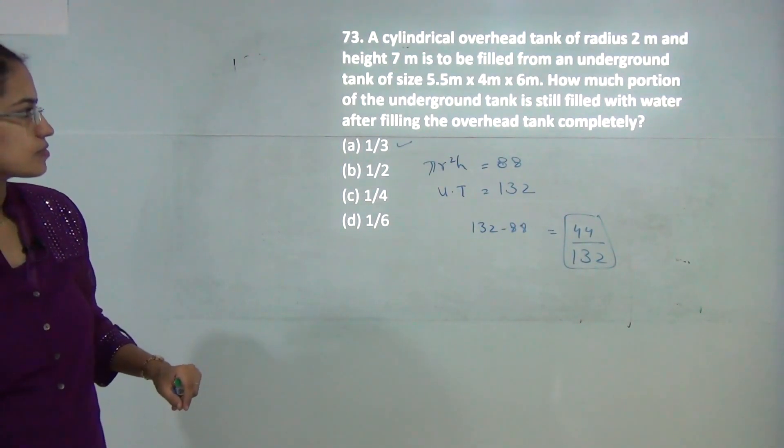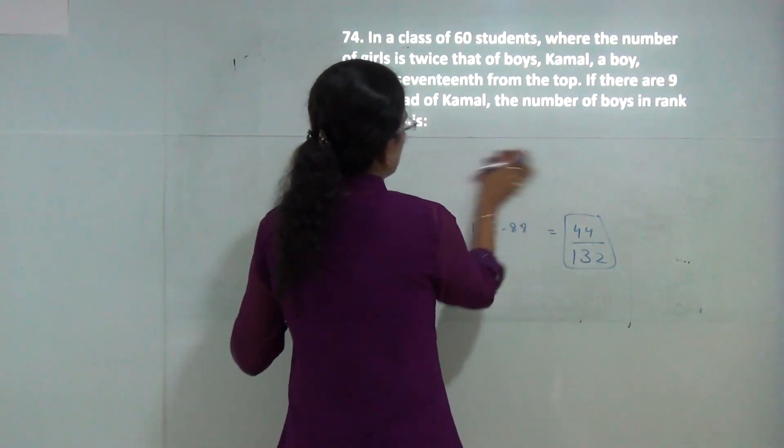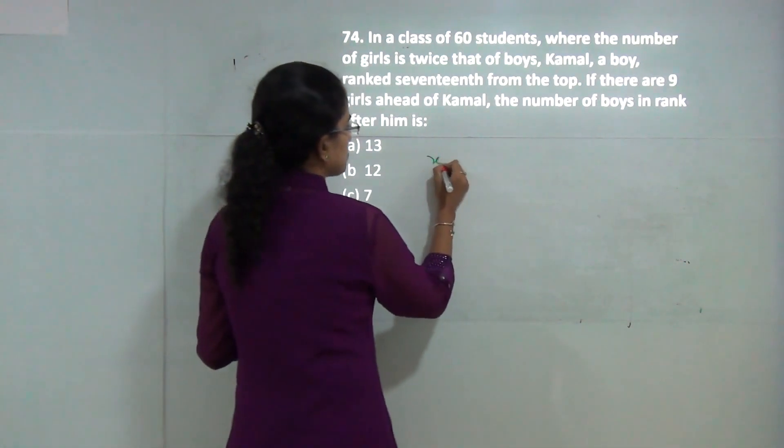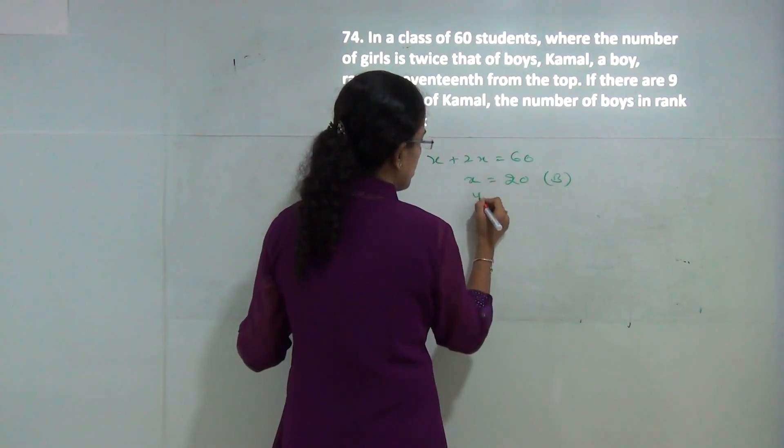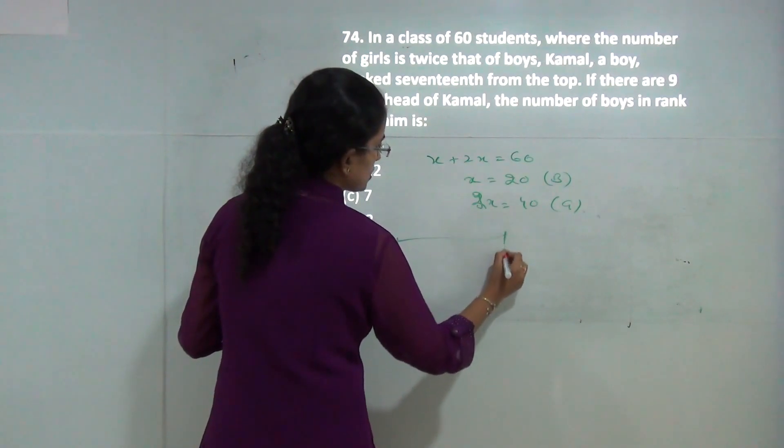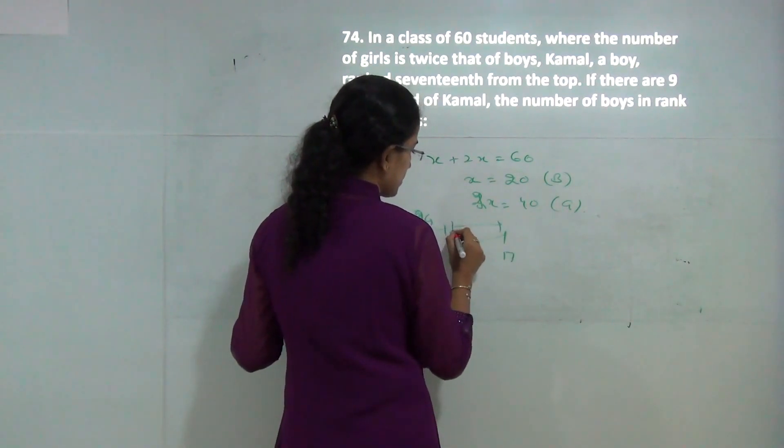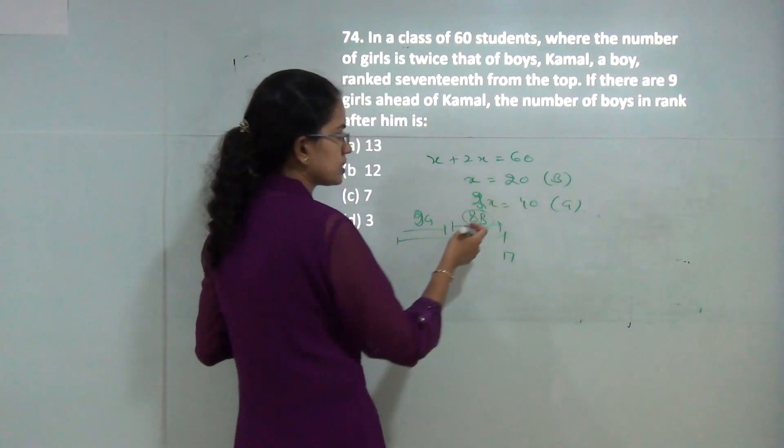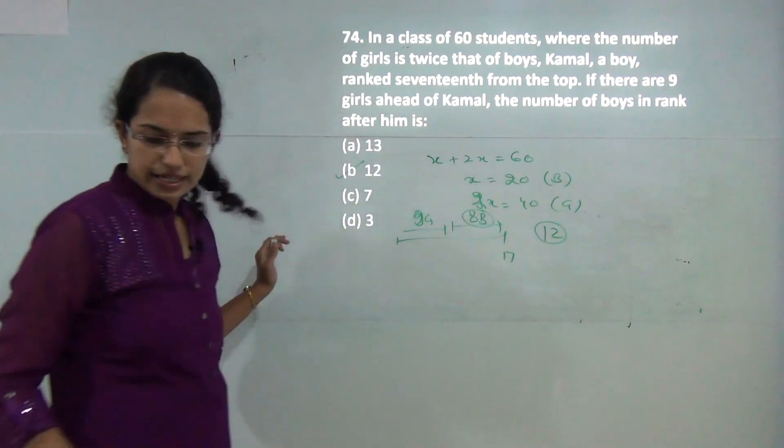There are 60 students, and girls are twice the boys. Let boys be x, so girls are 2x. Thus x plus 2x equals 60, giving x equals 20 boys and 40 girls. Kamal is at the 17th position with 9 girls ahead. So 8 boys are before Kamal. With 20 total boys and 8 before, 20 minus 8 equals 12 boys after him. 12 is the correct answer.